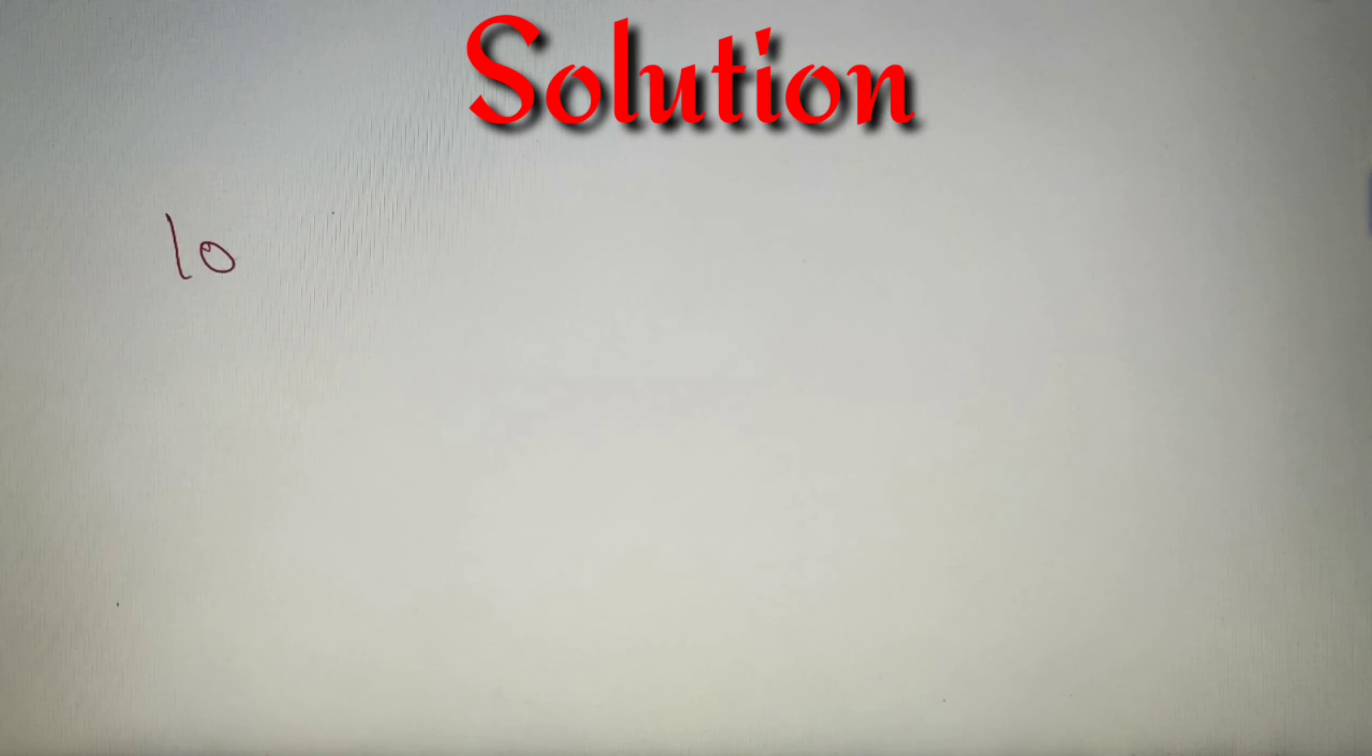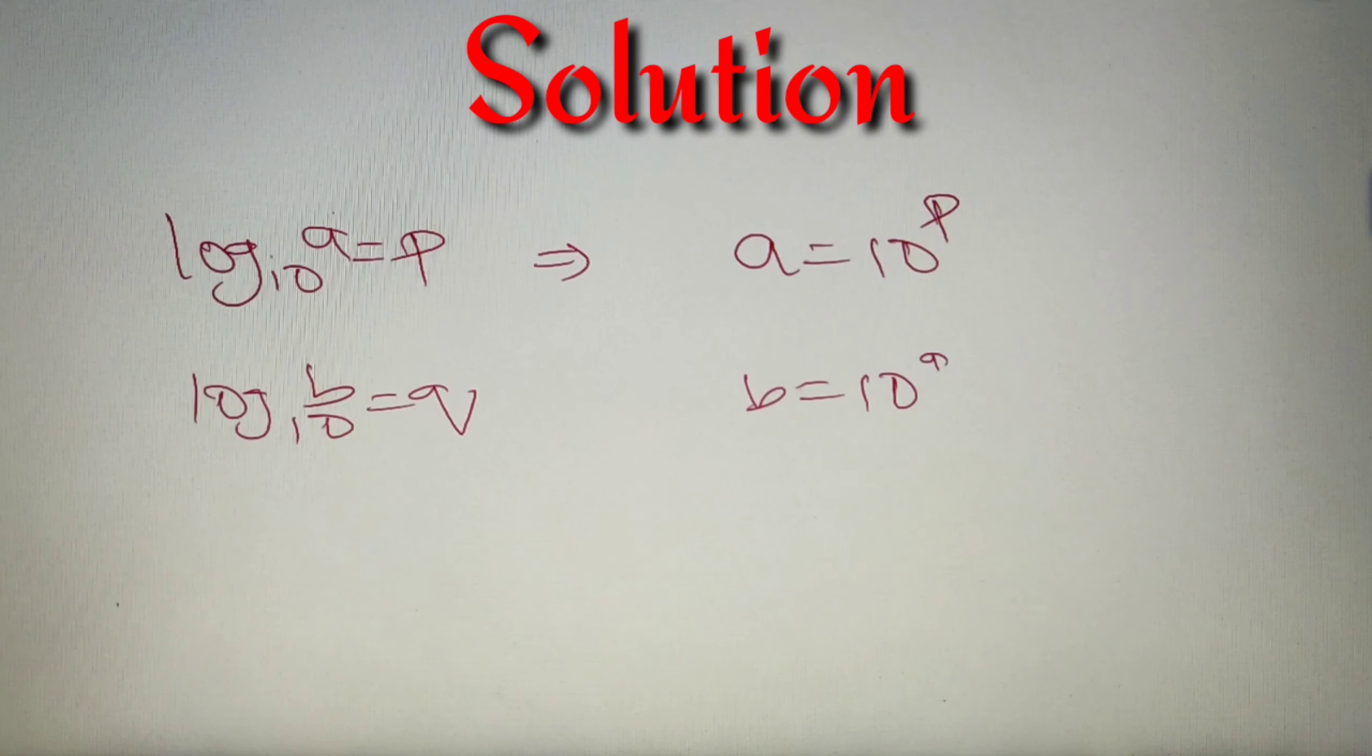Going to the given question, we are provided that the value of log A to the base 10 is equal to P and the value of log B to the base 10 is equal to Q. Now if we are provided with this information, then we can say that A is equal to 10 to the power P and B is equal to 10 to the power Q.